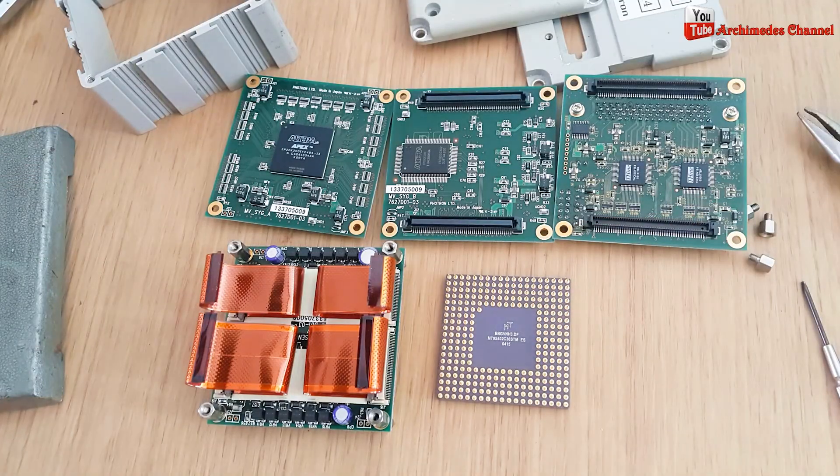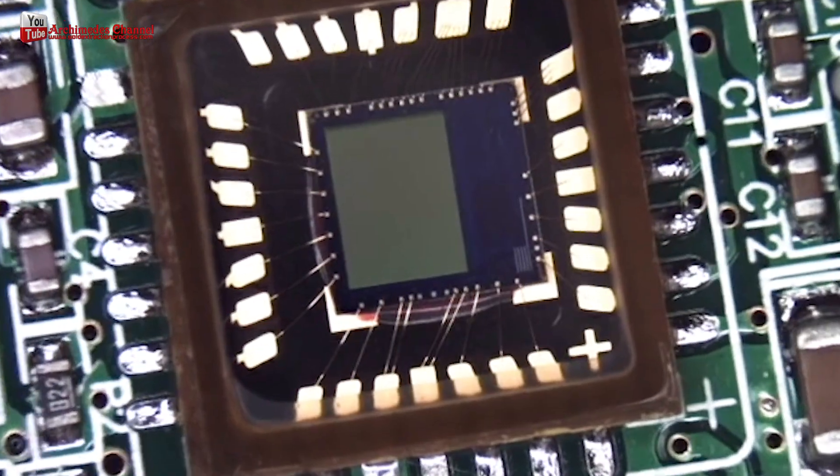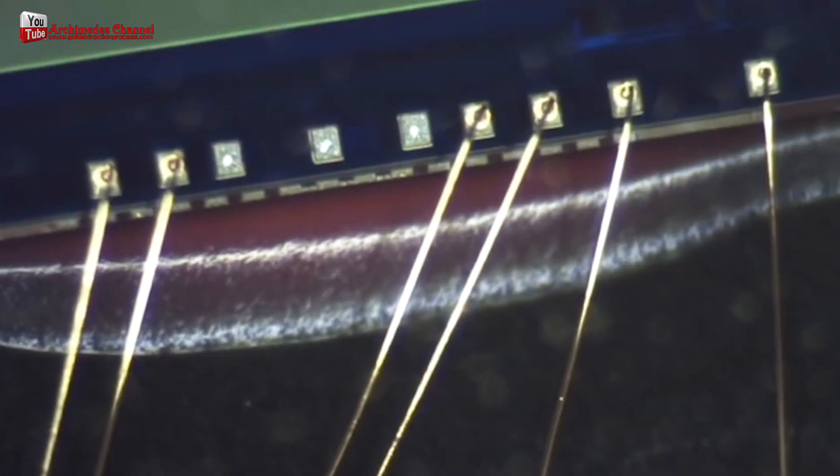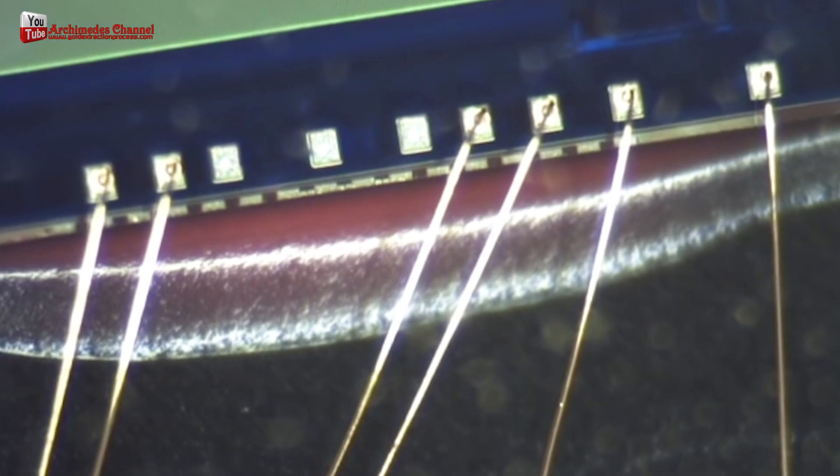Gold wire is often used in electronic components such as connectors, switches and integrated circuits. The gold is used because it is an excellent conductor of electricity and is resistant to corrosion.